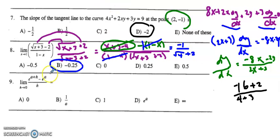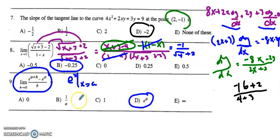For the last problem on this page, the best way to handle this is to recognize it as the definition of the derivative. You are differentiating e to the x where x equals a, and the derivative of e to the x is itself, so you get e to the a.